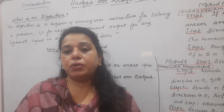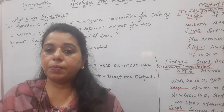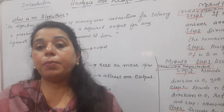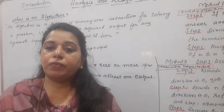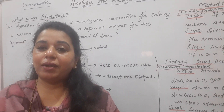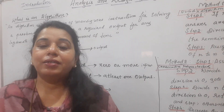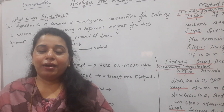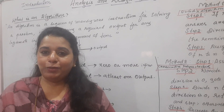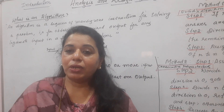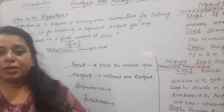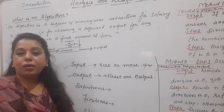Definiteness means unambiguous — there should not be any confusion in any of the statements of the algorithm. The steps should give exactly one meaning; there should be no ambiguity. For example, in a cooking recipe if it says 'take 100 grams of milk,' it should clearly mention whether it is cold milk, warm milk, or normal milk. When cooking channels say 'use salt as per taste' — 'as per taste' is an ambiguous instruction. Instead it should say 'take 50 grams of salt.' That is definiteness.